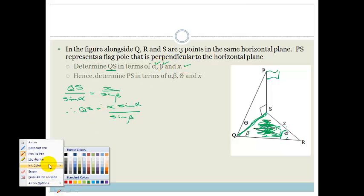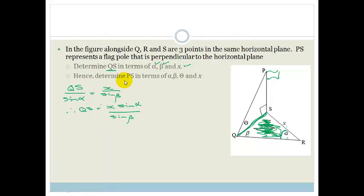Now let's change colors. It says, here's determine PS in terms of alpha, beta, x, and this here. But do you see that capital theta is in this triangle here, which we know is a right angle triangle. So as soon as we see a right angle triangle, what do we do? We go back to SOHCAHTOA.